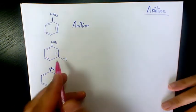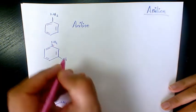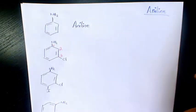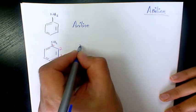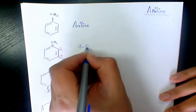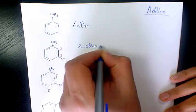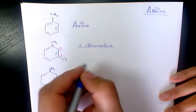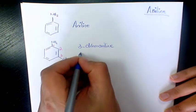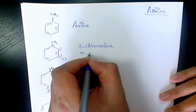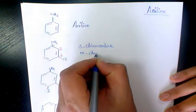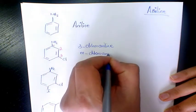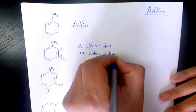The second one, we have aniline which is connected to a chlorine. If this one is the number one carbon, we count two and three — so we call it 3-chloroaniline or meta-chloroaniline.